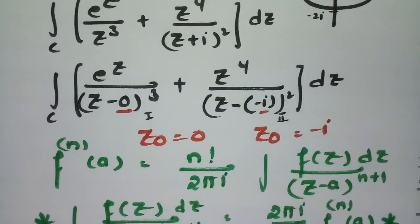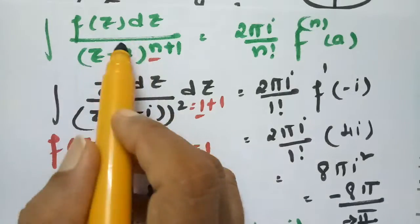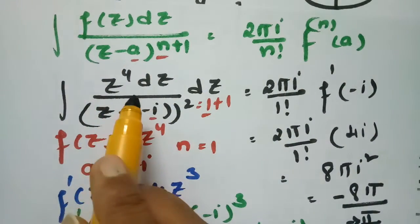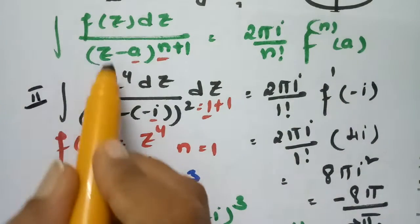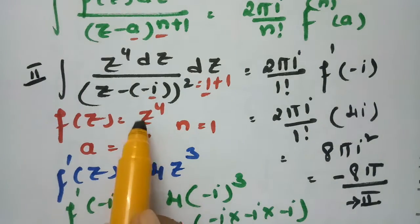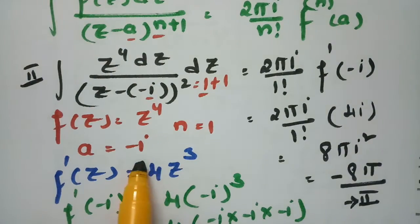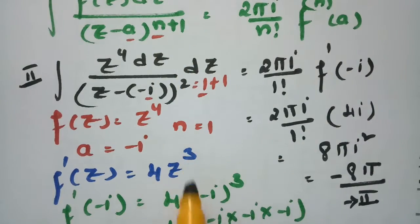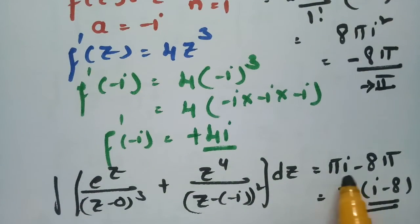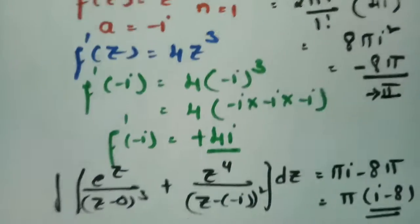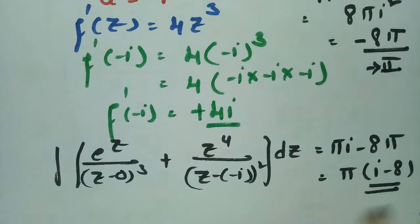For the second integral, f(z) = z⁴, a = −i, n = 1. After substituting and computing, the second integral value is −8π. Adding the two results, the final answer is π(i − 8).